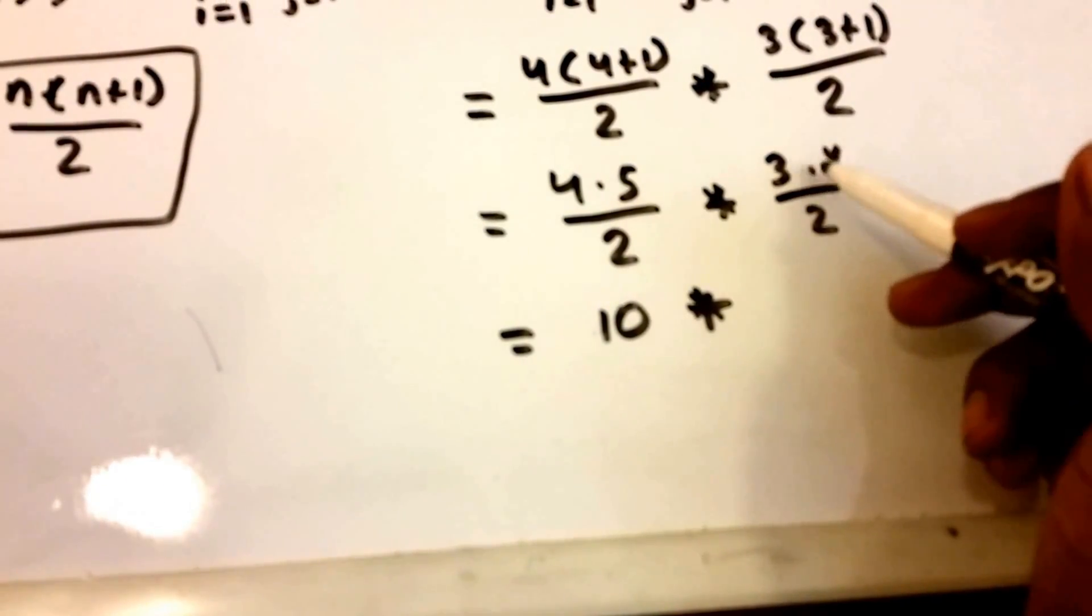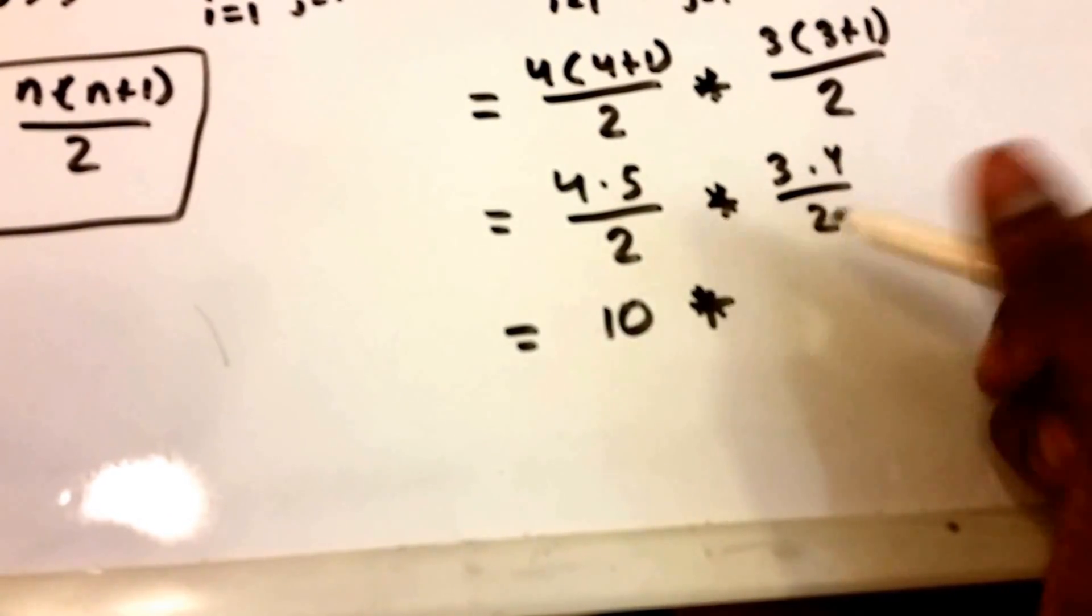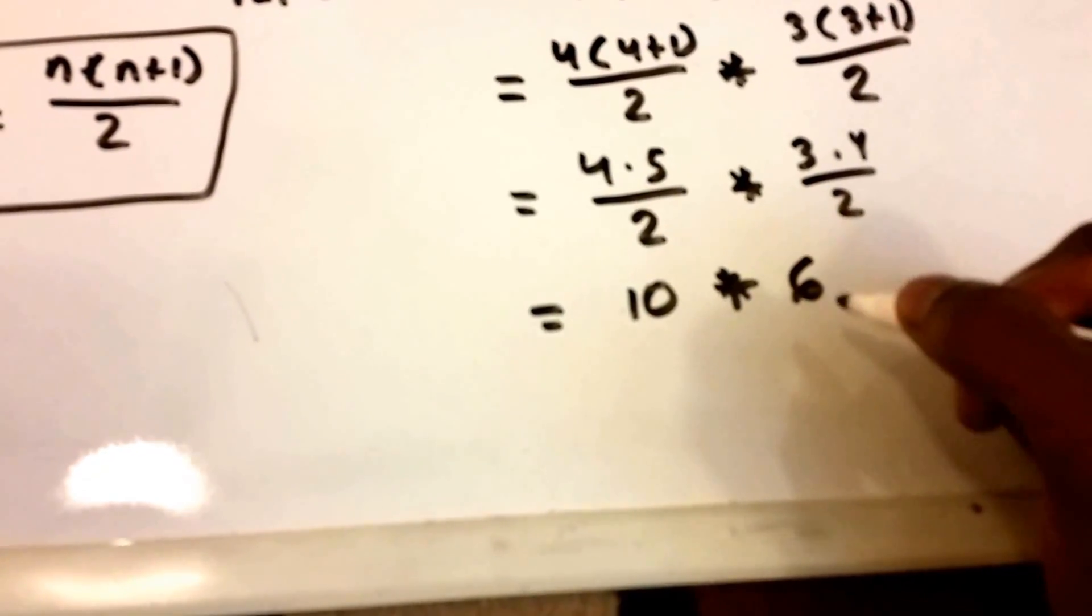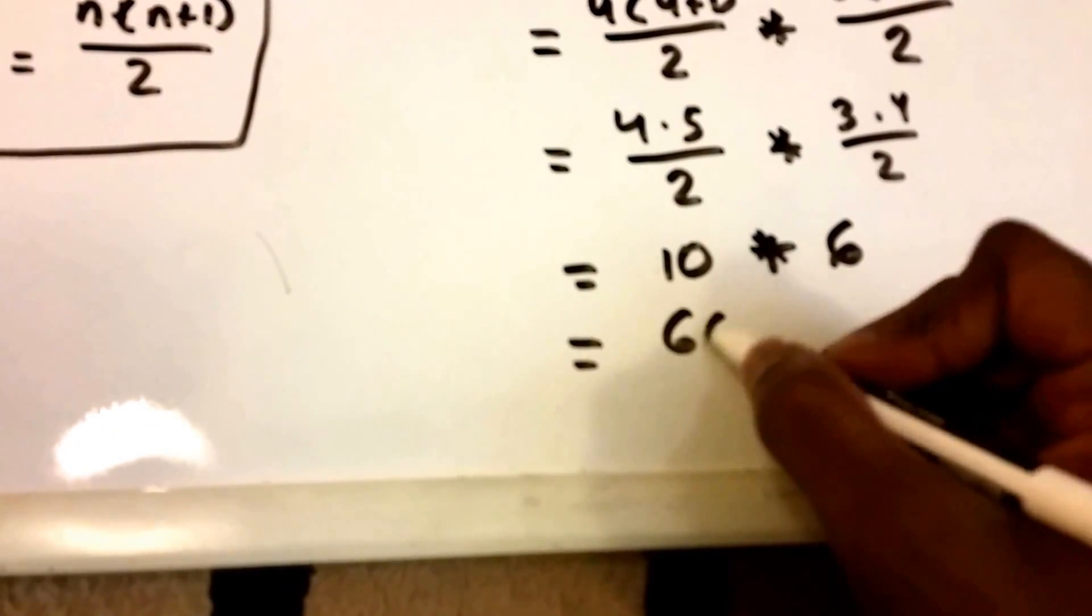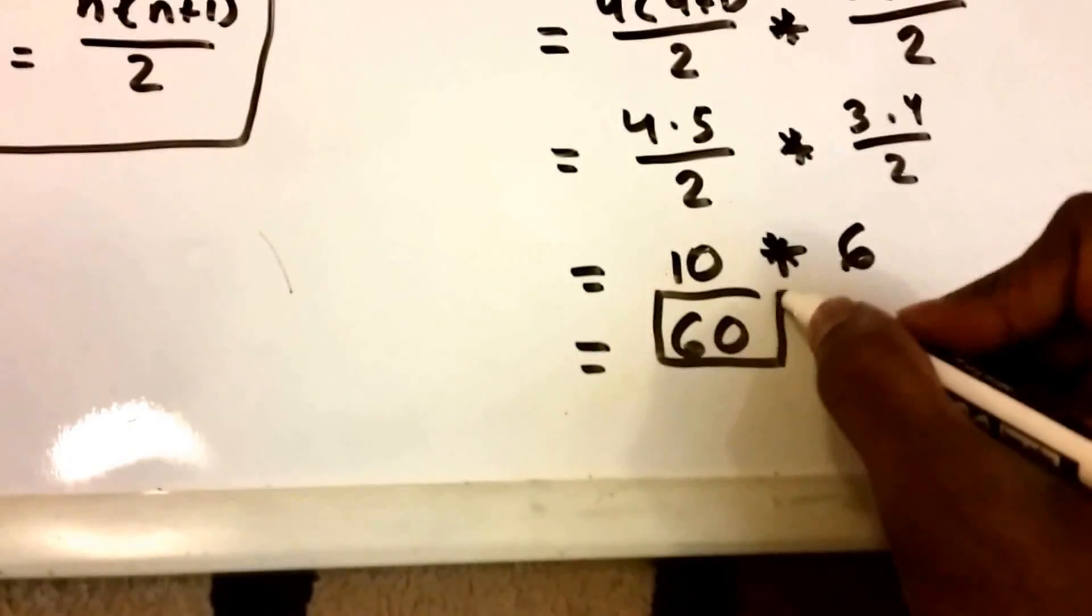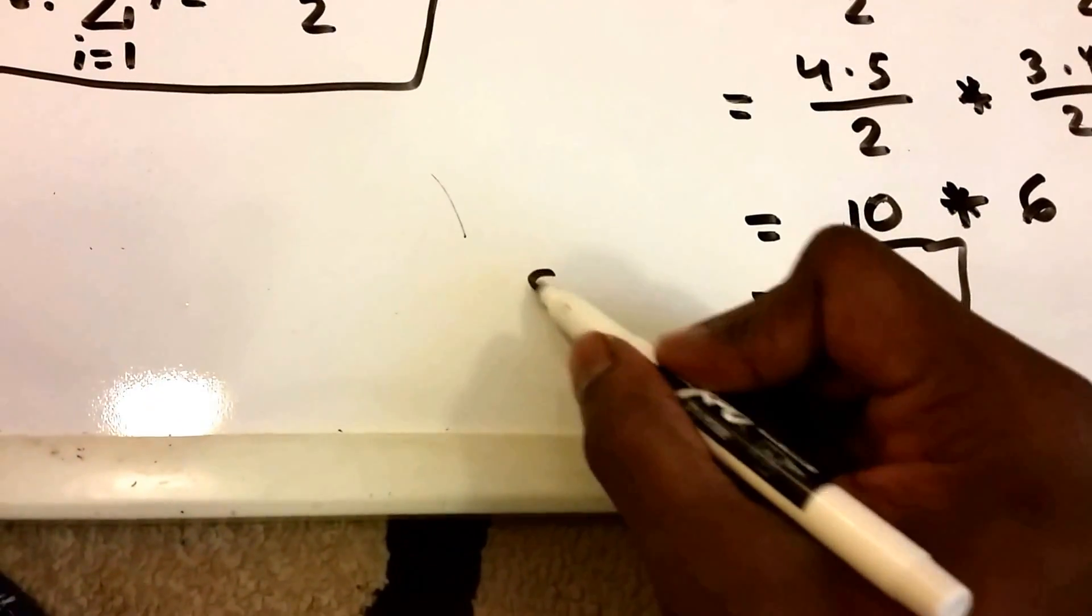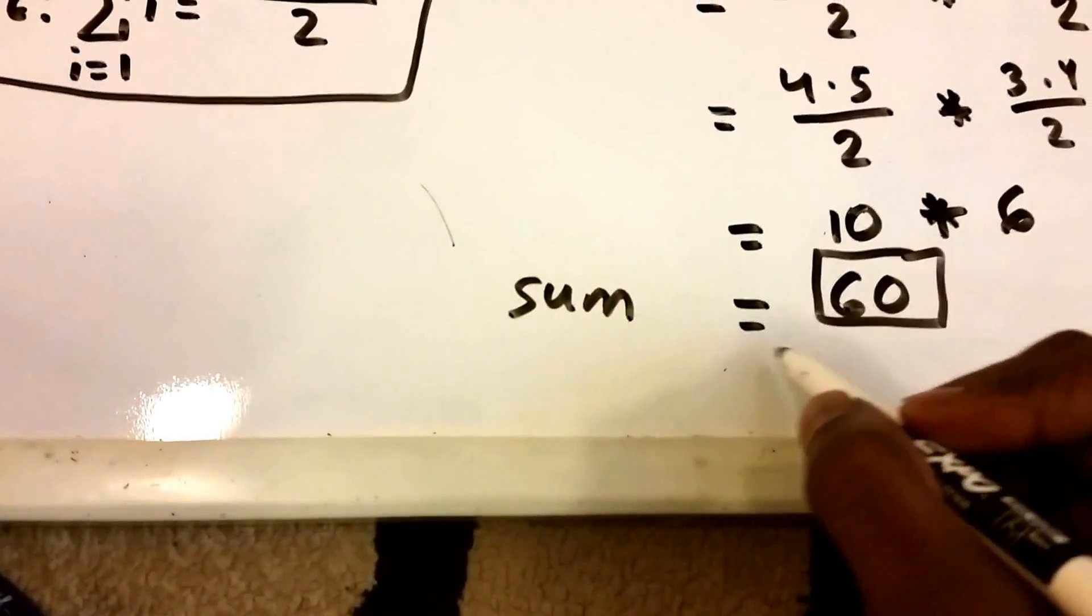And then I'm going to do 3 times 4 which is 12 divided by 2, so we're going to get 6 here. Okay, and the final answer is 60. So sum, sum is equal to 60.